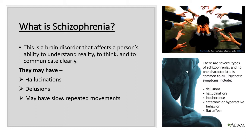Schizophrenia is a brain disorder that affects a person's ability to understand reality, to think, and to communicate clearly. People with schizophrenia experience hallucinations, delusions, and may have slow or repeated movements.